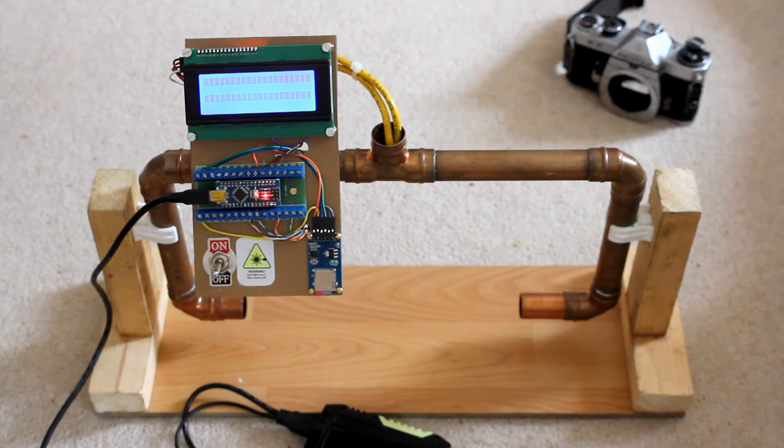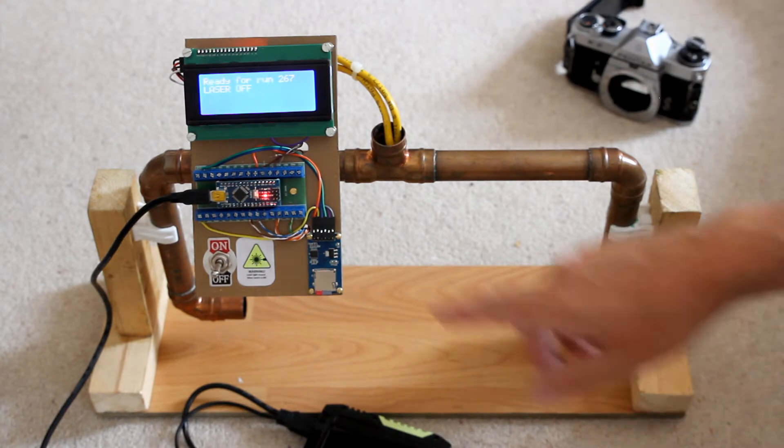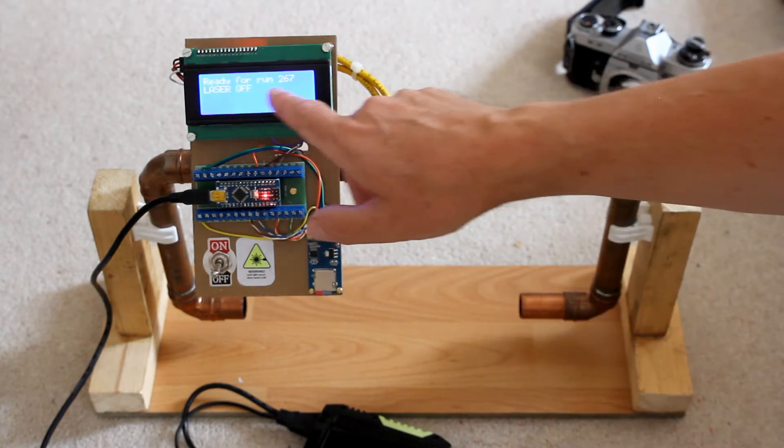So we'll just turn it on and hopefully you can see here the software is booted up and it says it's ready for run 267. Each time you do a test run on here the software will give that test sequence a new unique number so you can tie it to the camera that you're testing and you know which results go with which camera.